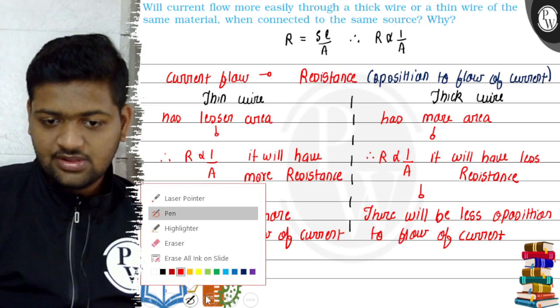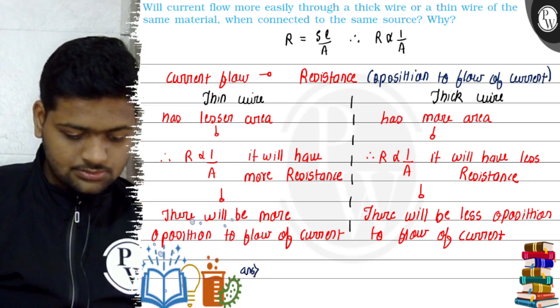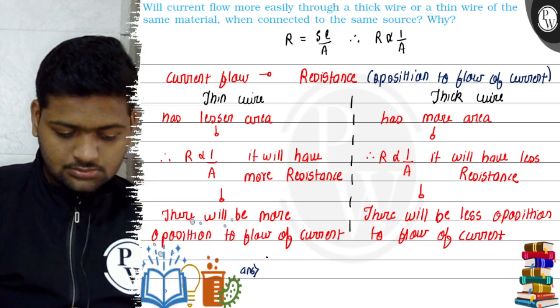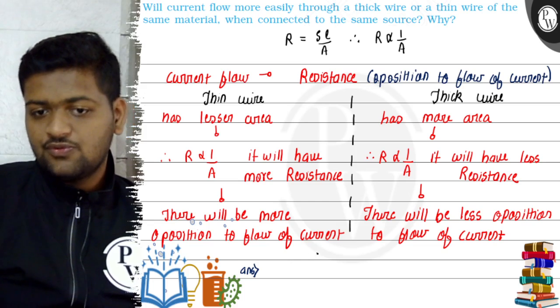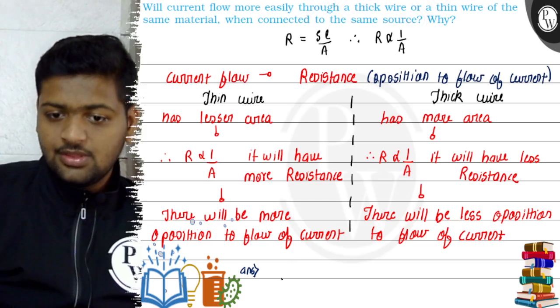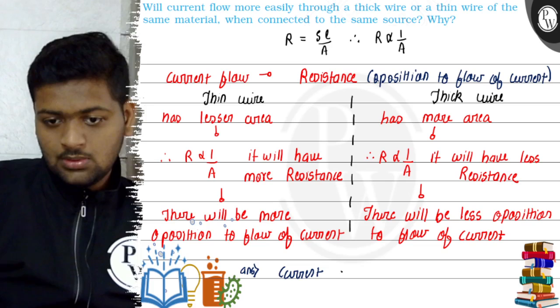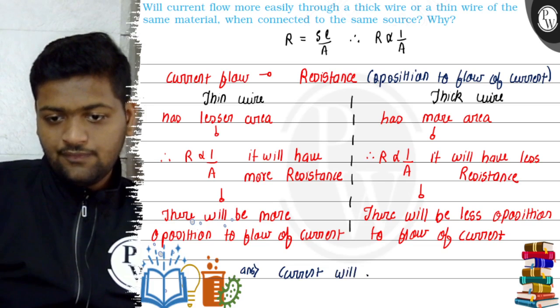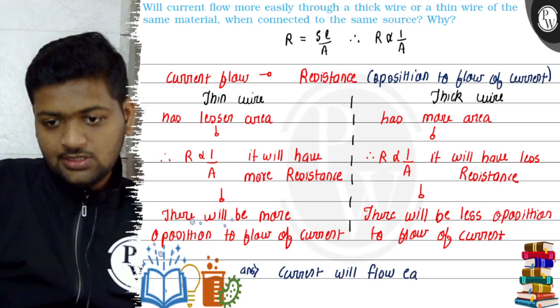Now we will write our final answer over here. Since there will be less opposition to the flow of current in thick wire, current will flow easily.